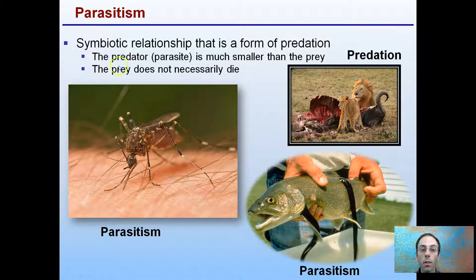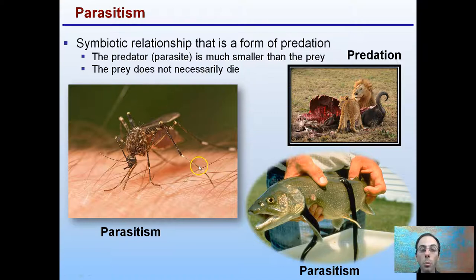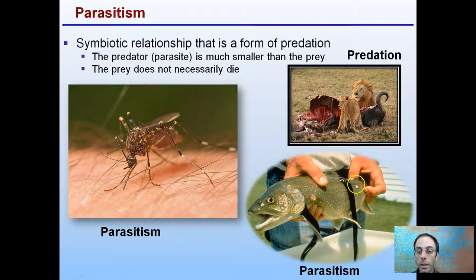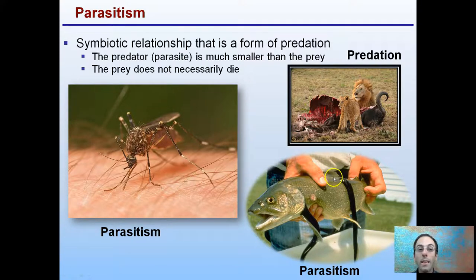In parasitism, the parasite is much smaller than the prey, whereas with a true predator they're about equal size. The prey doesn't necessarily need to die — we may not die from a mosquito bite, assuming it isn't carrying any harmful diseases. Leeches do not need to kill their host, though in some cases they do.